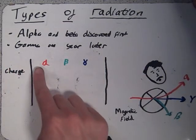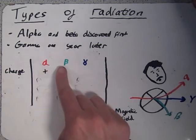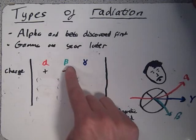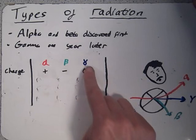It was found that alpha radiation is made up of two protons and two neutrons, making it positively charged. Beta radiation is made up of high energy electrons, making it negatively charged. And gamma radiation is made up of a wave of high energy photons, with a wavelength on the order of 10 to the minus 11 metres.